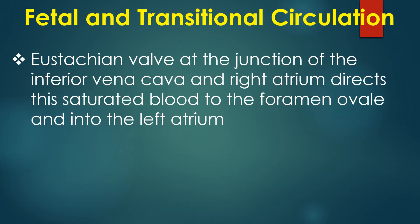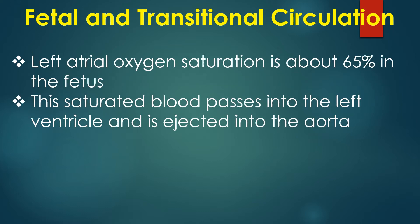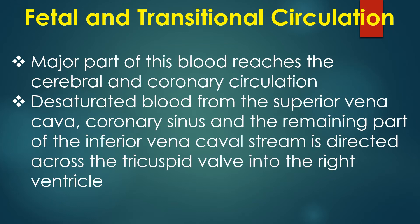The Eustachian valve at the junction of the inferior vena cava and the right atrium directs this saturated blood through the foramen ovale and into the left atrium. Left atrial oxygen saturation is about 65 percent in the fetus. This saturated blood passes into the left ventricle and is ejected into the aorta, with the major part reaching the cerebral and coronary circulation.